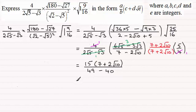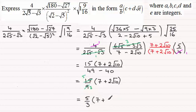We've got 15 divided by 9, 15 over 9 times 7 plus 2 root 10. I can see that we can cancel 3 into 15 and 9. 3s into 15 go 5, 3s into 9 goes 3. So we end up with 5 over 3 multiplied with 7 plus 2 root 10.